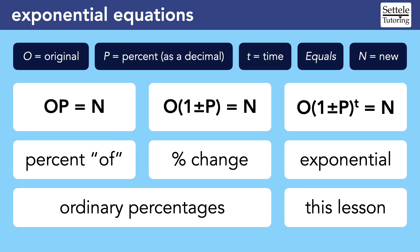We'll add the exponent t to the outside of the parentheses. The t allows us to calculate a percentage multiple times, and in most stories, the exponent will represent the passage of time in years, months, days, whatever the story wants.